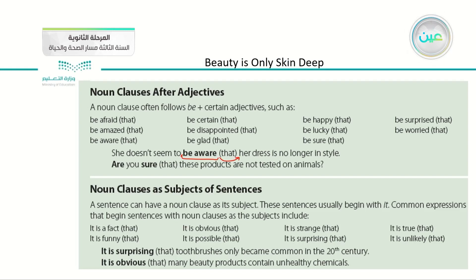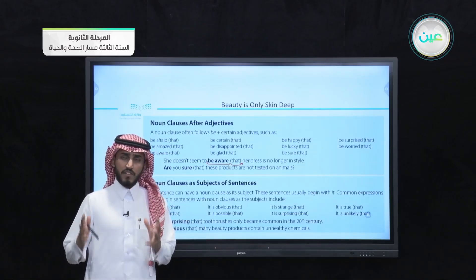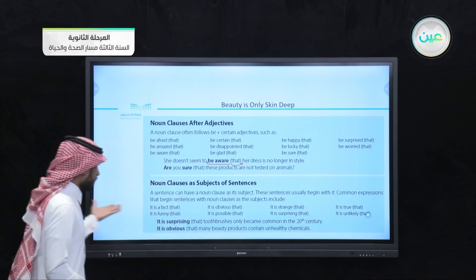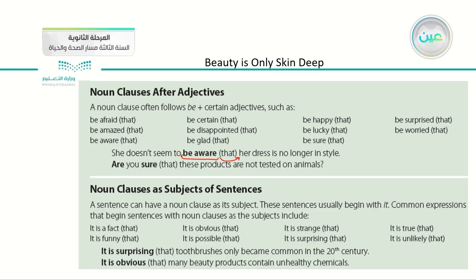The third situation where we use the noun clause is as a subject of sentences. A noun clause sometimes comes at the beginning of the sentence. A sentence can have a noun clause as its subject, and these sentences usually begin with 'it.' For example: 'it is a fact that,' 'it is funny that,' 'it's obvious that,' 'it's possible that.' One example is: 'It is surprising that toothbrushes only became common in the 20th century.'